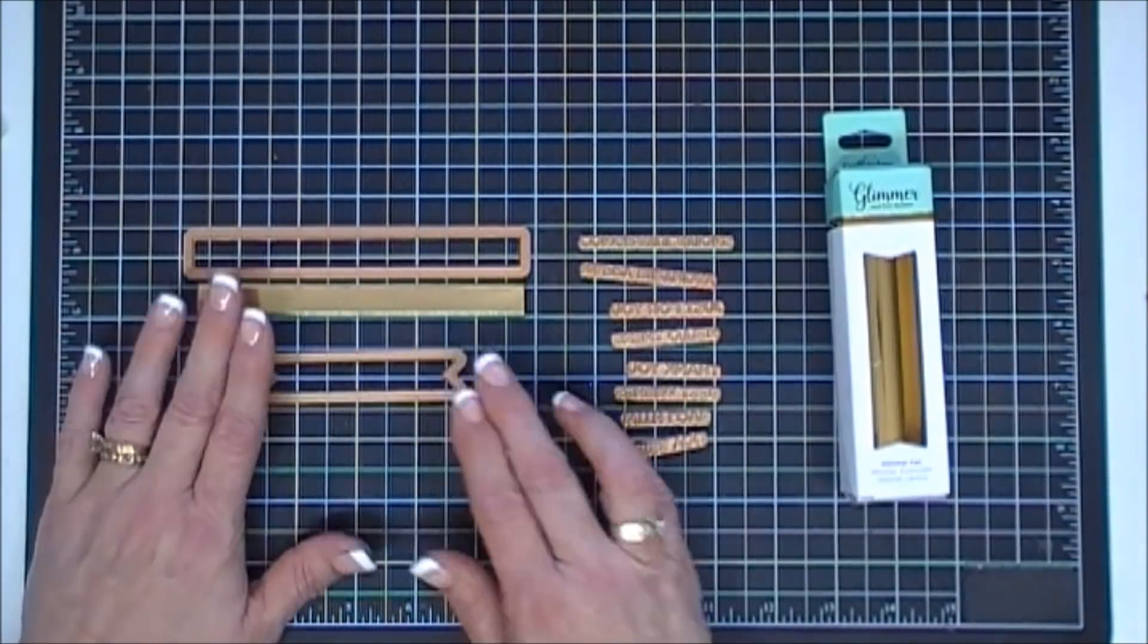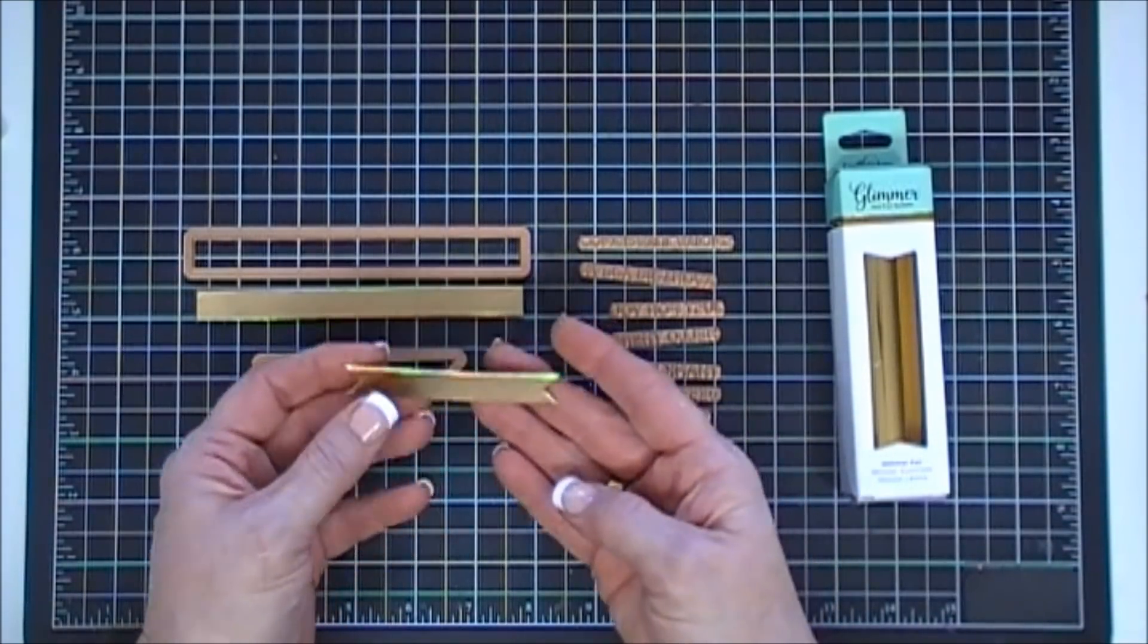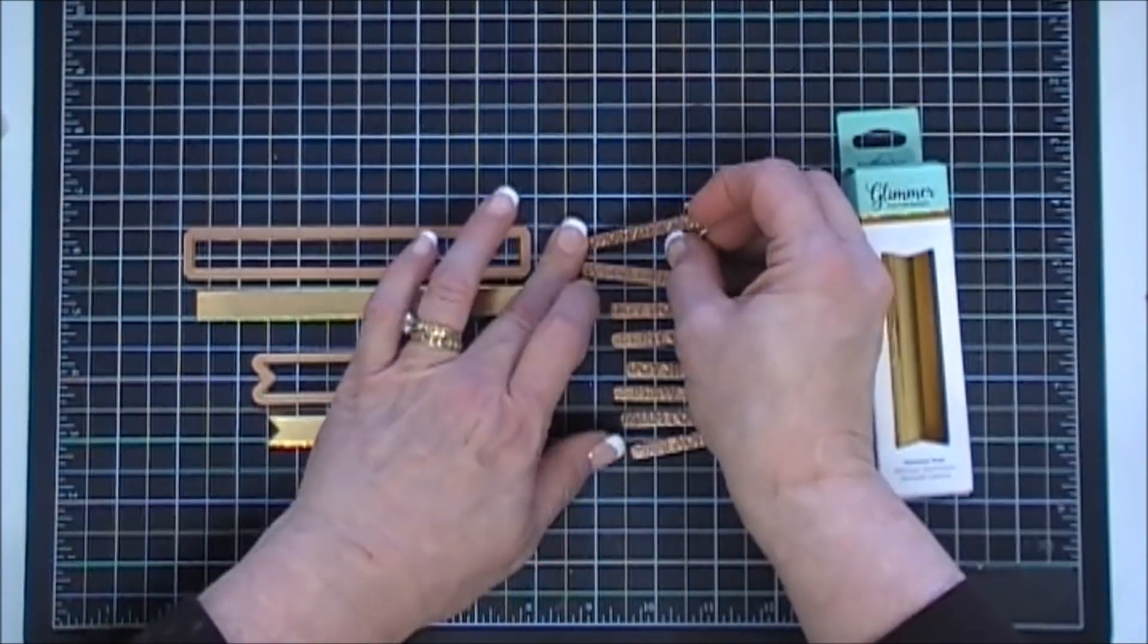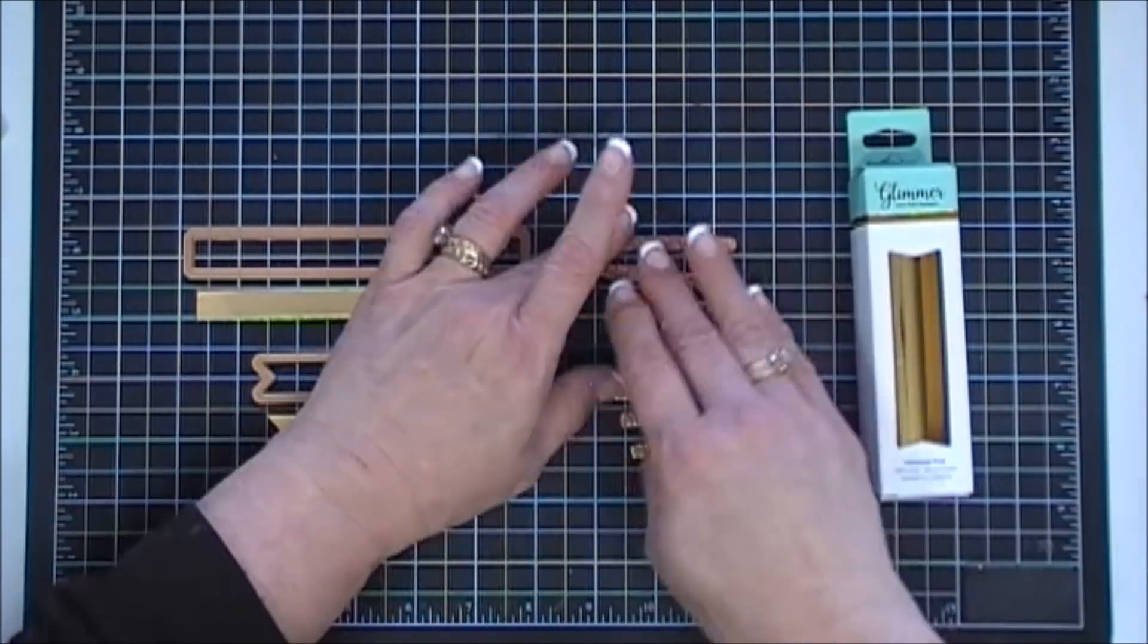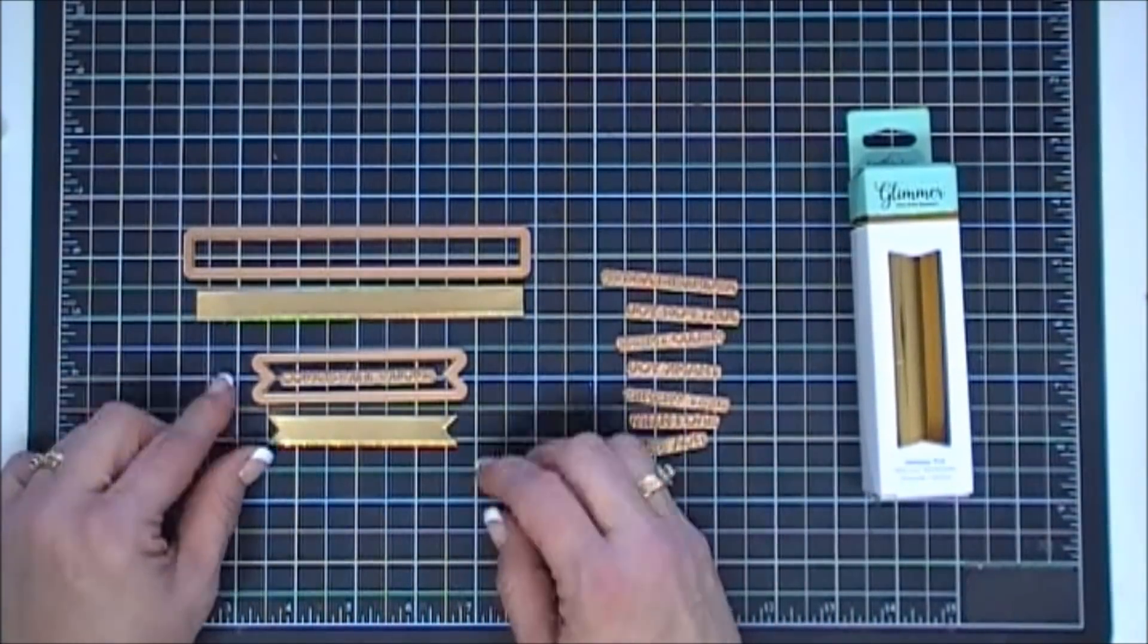You get a banner, both of them are banner dies. One will cut out a three and a half inch banner, and then the other one cuts out a three and a quarter inch fishtail banner. The glimmer plates you get eight in total and they're all sentiments, which I just think is so fantastic.